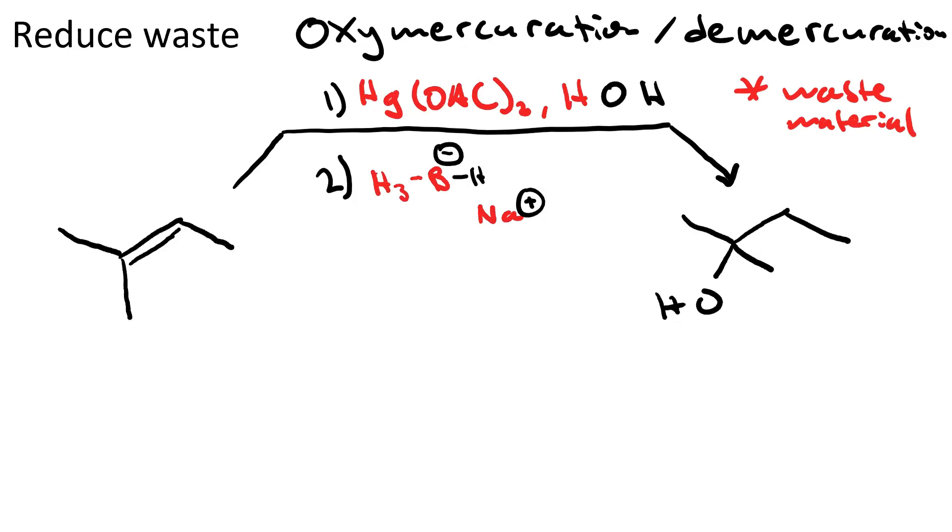The thing with oxymercuration demercuration is that everything marked in red is waste material. That means you are putting toxic mercury ions into the environment. So not only are you wasting a lot of material you're also creating a toxic byproduct. There must be a better way to do this.